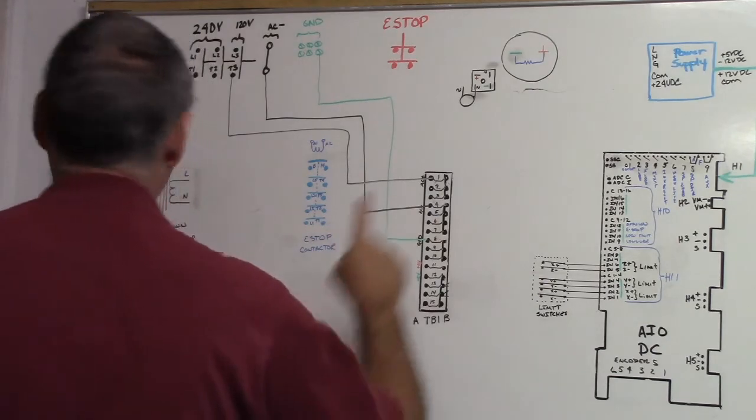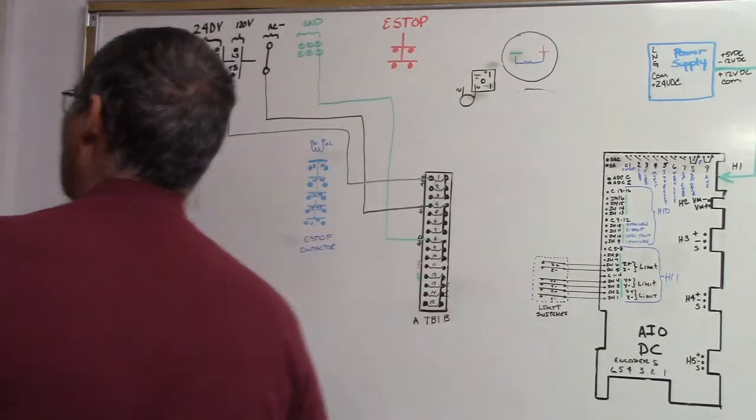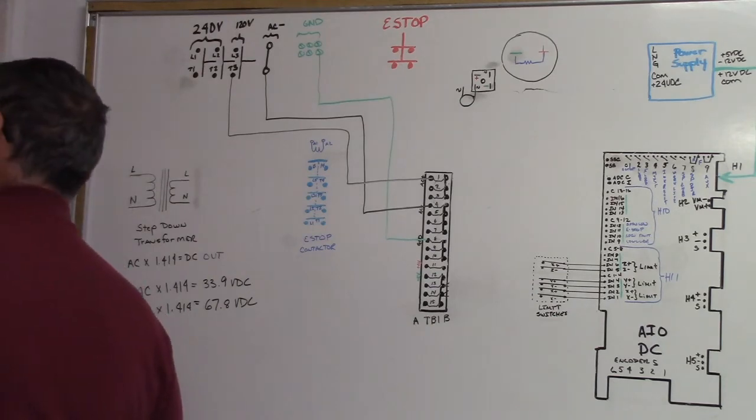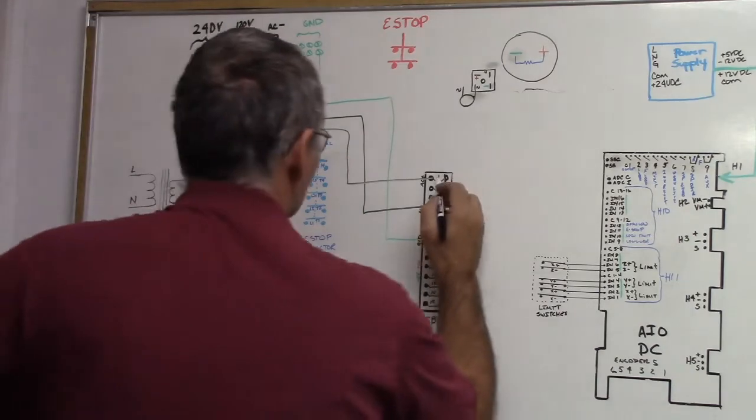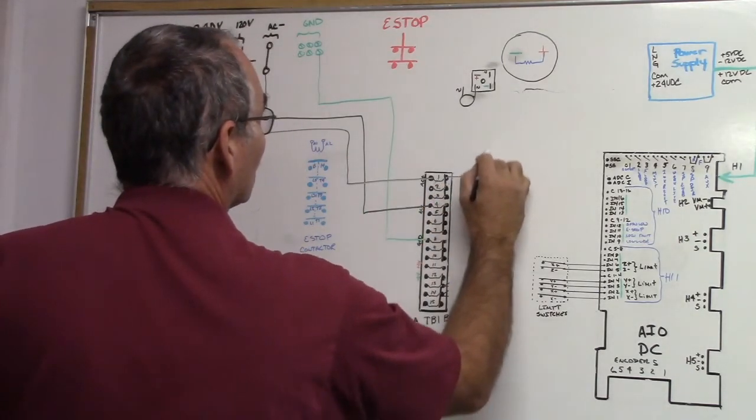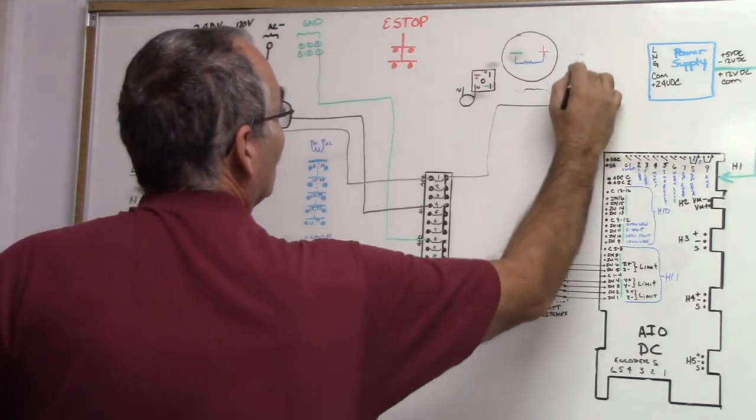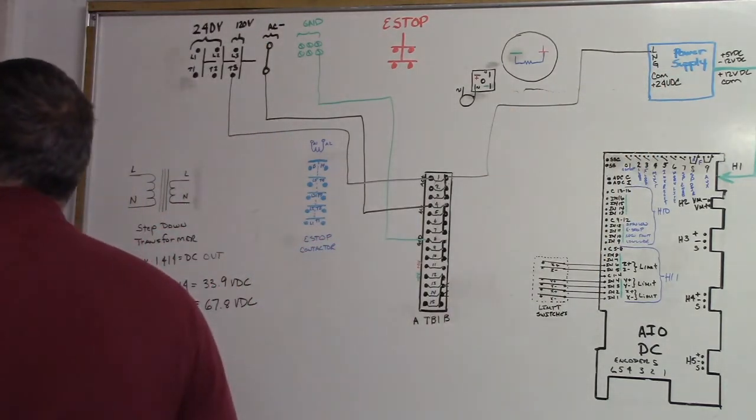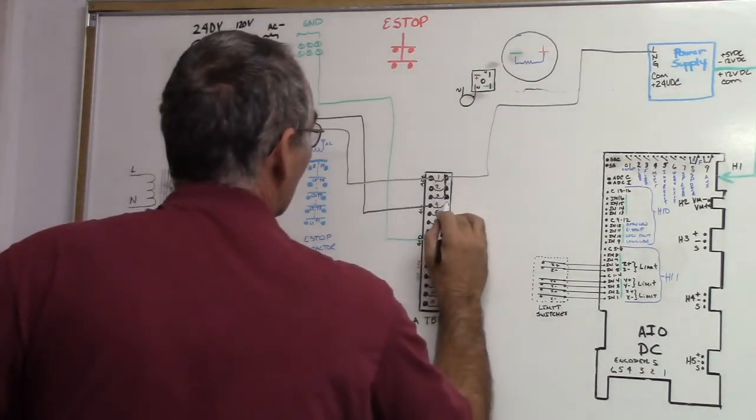So now we've got everything there. Now let's feed our power supply. Our power supply AC line is going to TB1-1B. So we're going to go up, there's the line of our power supply. And then we're going to go to TB1-4B for our neutral.